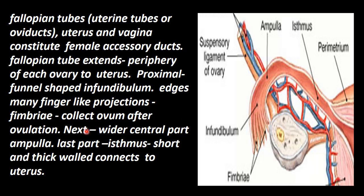The oviduct collects the ovum after ovulation. In the oviduct, the wider central part is called the ampulla. The last part is called the isthmus. The isthmus is short, thick-walled, and connects to the uterus. This is the structure of the fallopian tube or oviduct.